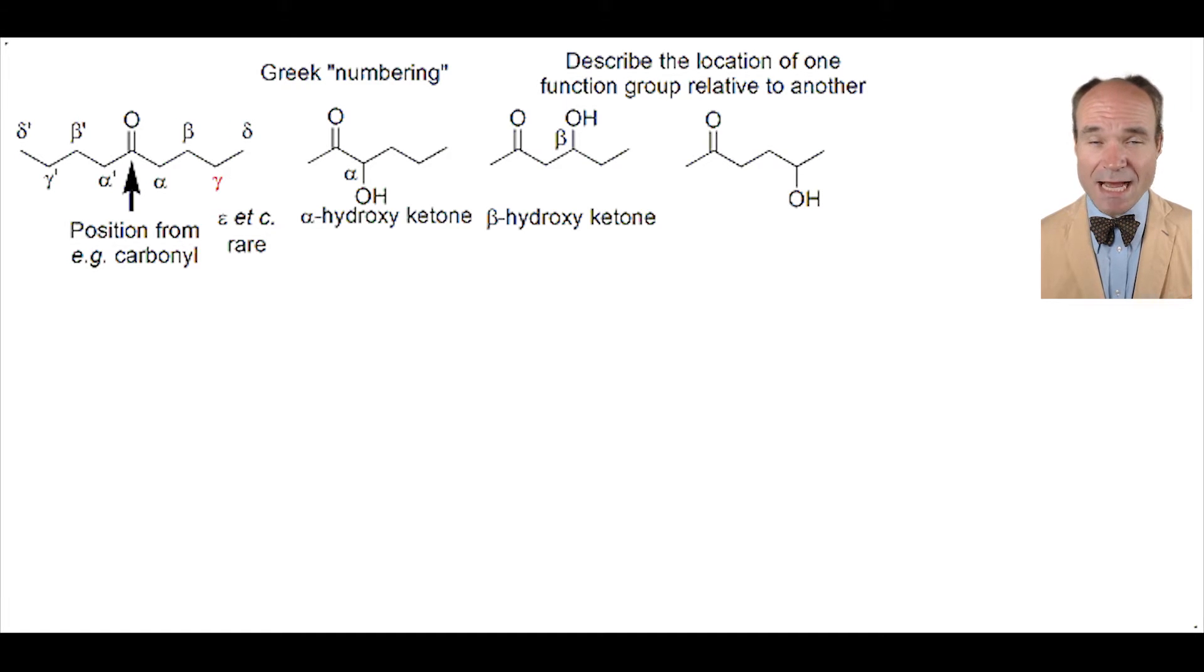Continuing on, the alcohol is now an additional carbon from the ketone at the gamma position. So this is gamma hydroxy ketone. And finally, a last movement of the alcohol, one more carbon away from the ketone, thus providing a delta hydroxy ketone.